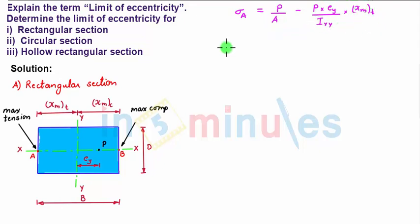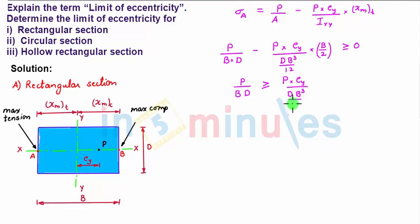Equating this with zero we have P by A, where area is B times D, minus P times ey upon Iy which is DB cubed by 12 multiplied by xmax of tension which is B by 2. Taking this term on the right hand side, we have P by BD should be greater than or equal to P times ey upon DB cubed by 12 multiplied by B by 2.